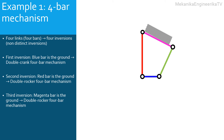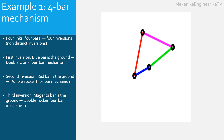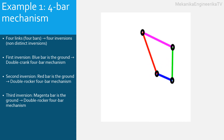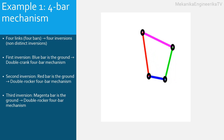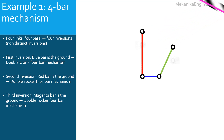The third inversion is created by grounding the magenta bar. In this inversion, the blue, red, and green bars are rotating. Mostly, the red and the green bars are one the input and the other is the output. The blue bar is the coupler. Here, the red and green bars cannot undertake a full 360-degree rotation. They are called rockers. This mechanism is called a double rocker four-bar mechanism. The third inversion is also schematized as follows.